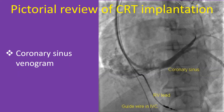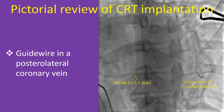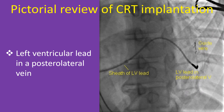Coronary sinus venogram can be obtained by injecting iodinated contrast into the coronary sinus through the sheath. Balloon occlusion of the proximal coronary sinus can improve the visualization of the coronary venous tree. A guide wire can be introduced slowly through the sheath in the coronary sinus and navigated to a good posterolateral vein, visualized by the previous coronary sinus venogram. The left ventricular lead of the CRT device can then be threaded over the guide wire in the posterolateral vein.